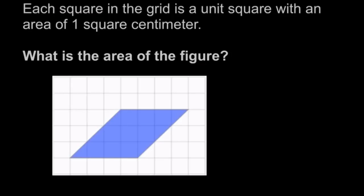Each square in the grid is a unit square with an area of one square centimeter. So each of these squares is one square centimeter. This is one square centimeter, and this is one square centimeter, and so on.